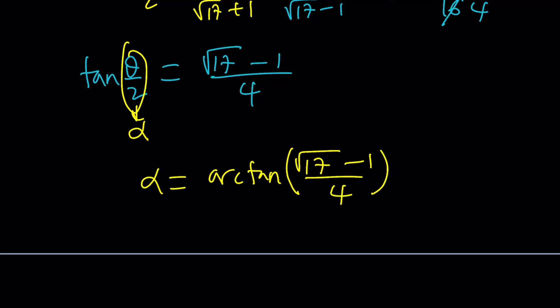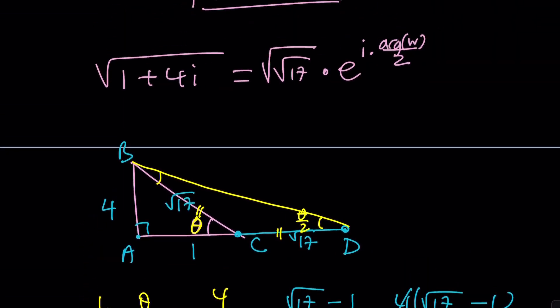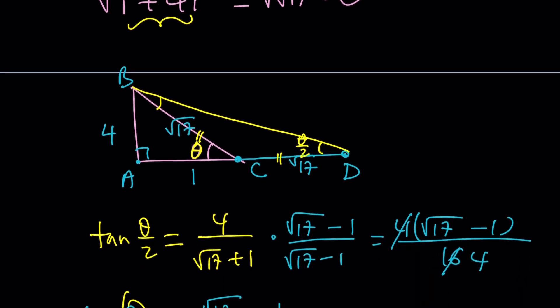So alpha from here is just going to be arc tan of square root of 17 minus 1 over 4. This is the argument for our square root. And what about the modulus? The modulus is the fourth root of 17, right? So here's the problem. We couldn't convert this easily because this is not a special angle.